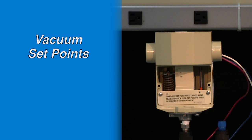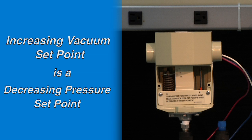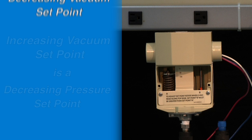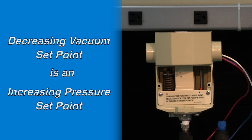For set points on vacuum range switches, it is best to think of the set point as a negative pressure. So an increasing vacuum set point is a decreasing pressure set point and a decreasing vacuum set point is an increasing pressure set point.